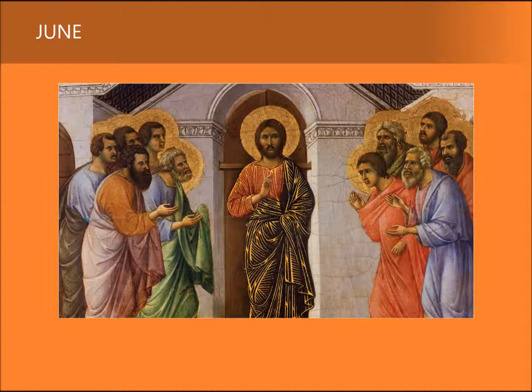Duccio inherits from Byzantine convention the visual motif of gold as a symbol of the divine realm. Following this centuries-old tradition, the artist employs gold leaf, finely applied in a pattern of abstract striations over the surface of Christ's tunic and mantle.